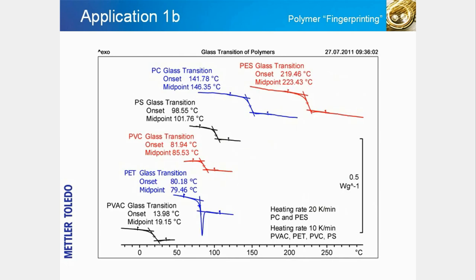Glass transition temperatures can also be used to identify and characterize polymers. The glass transition is observed when an amorphous material is heated and changes from the rigid, glassy state to a soft, rubbery state, or vice versa on cooling. There is no uptake or release of latent heat, only a change in the specific heat capacity. The slide displays the glass transitions of several thermoplastic polymers.